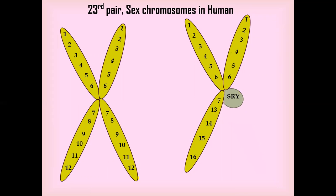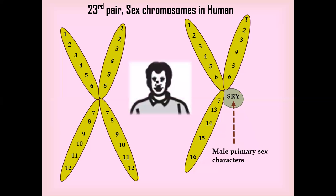While in males, one is X and the other is Y-like chromosome. This Y-like chromosome contains the SRY gene, which gives information for formation of primary characteristics in males.